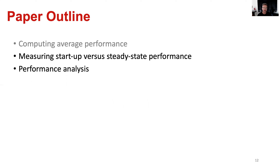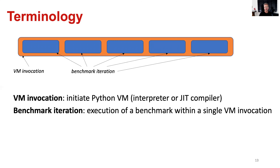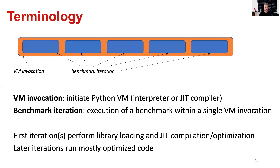Let's now delve into the statistically rigorous benchmark methodology for measuring startup and steady state performance. We refer to a VM invocation as initiating a Python VM — either an interpreter in the case of CPython, or a JIT compiler in the case of PyPy. Once the VM is launched, we can execute the benchmark multiple times; each execution is called a benchmark iteration. The first few iterations include library loading and JIT compilation overhead, whereas later iterations run mostly optimized code. We use this insight to develop our methodology for measuring startup and steady state performance.